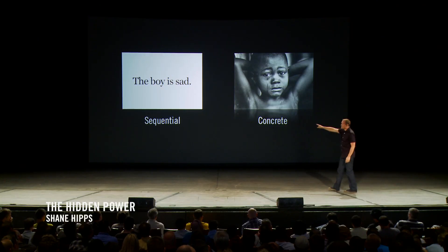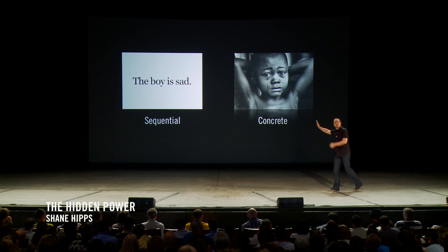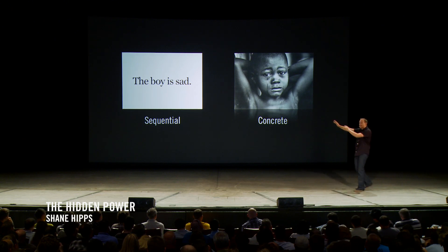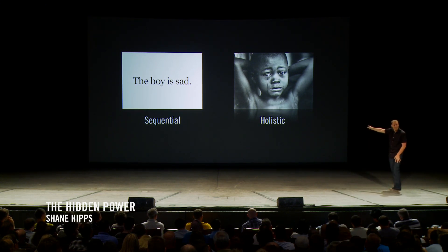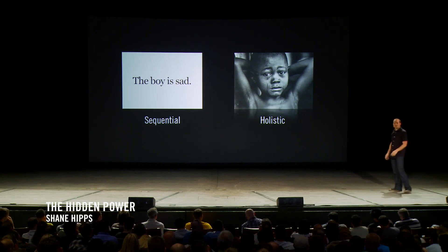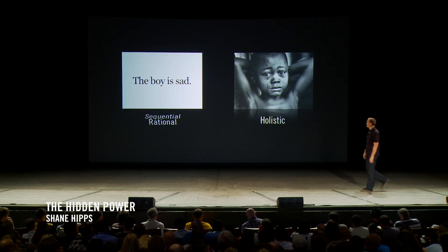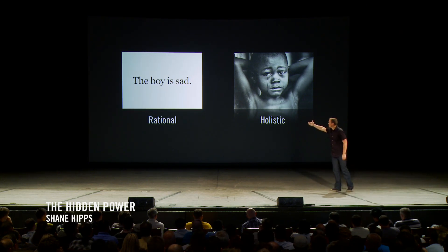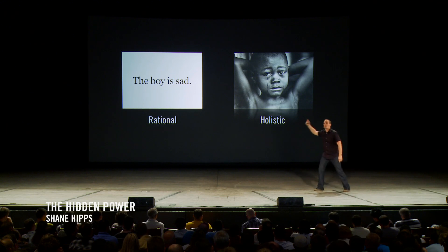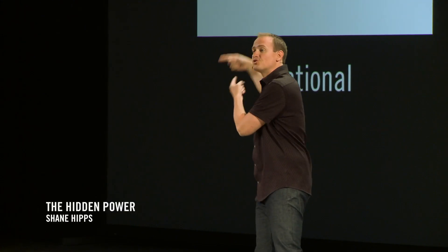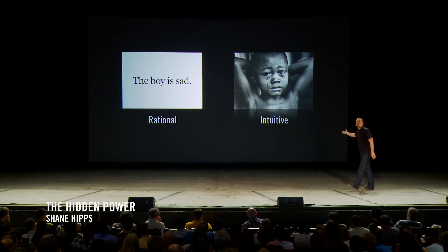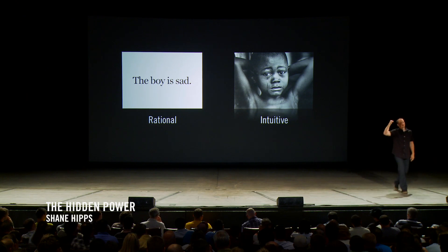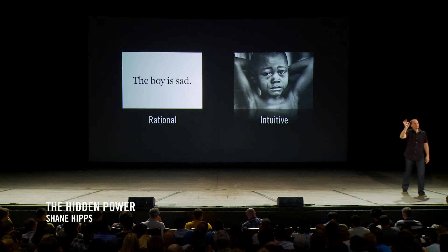This is sequential — it must be processed in sequence in order to understand it. This is holistic. You experience it all at once; there is no sequence, there is no beginning and end. This is rational — it actually requires skills to decode. This is intuitive. There are no skills required to look at an image, none whatsoever.